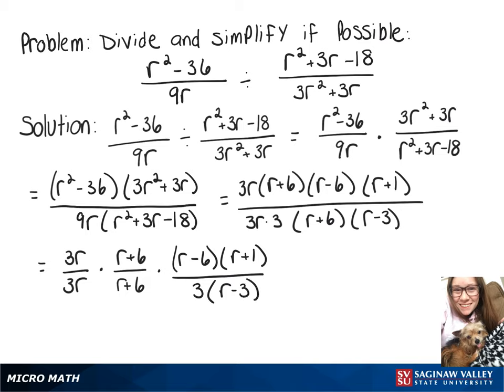And then since 3r over 3r and r plus 6 over r plus 6 are equal to 1, those will cancel out. And that leaves r minus 6 times r plus 1.